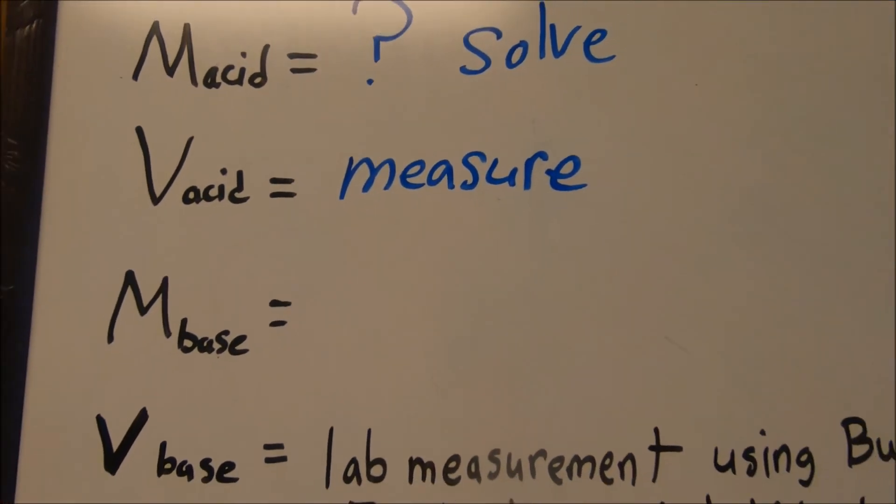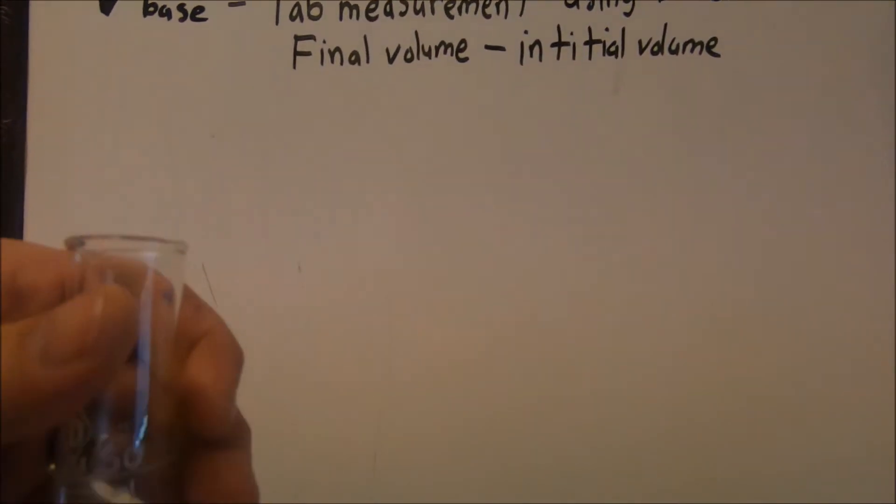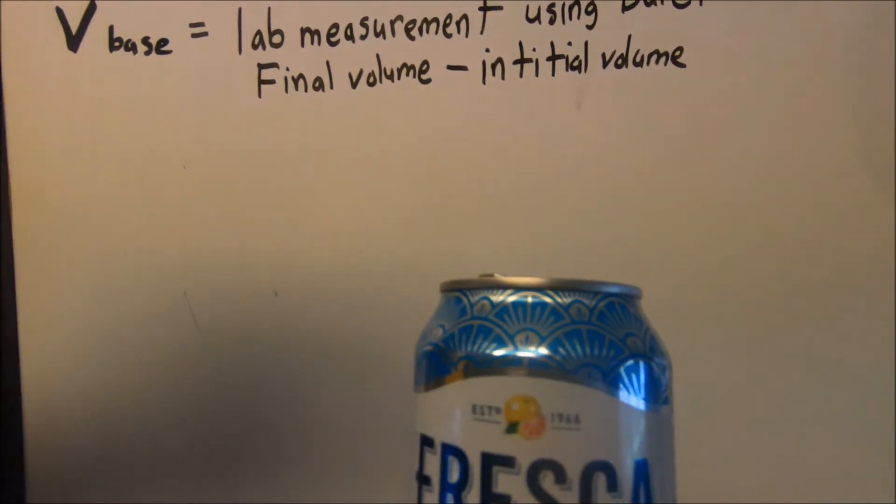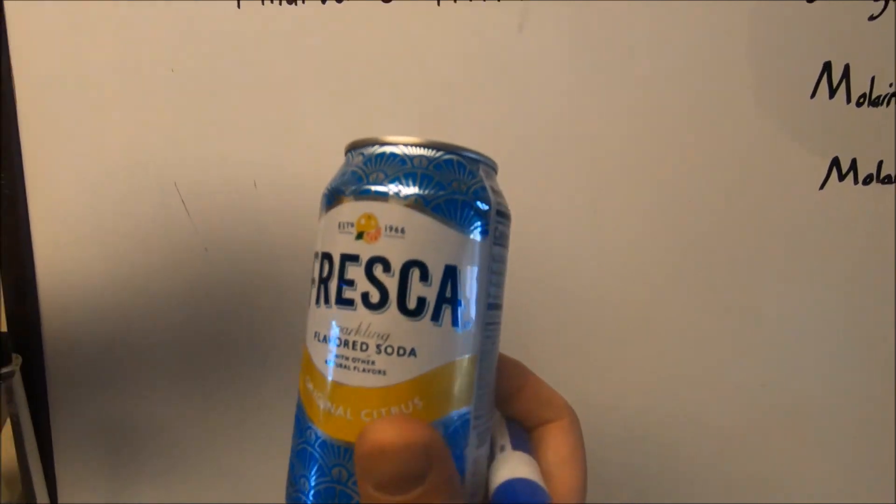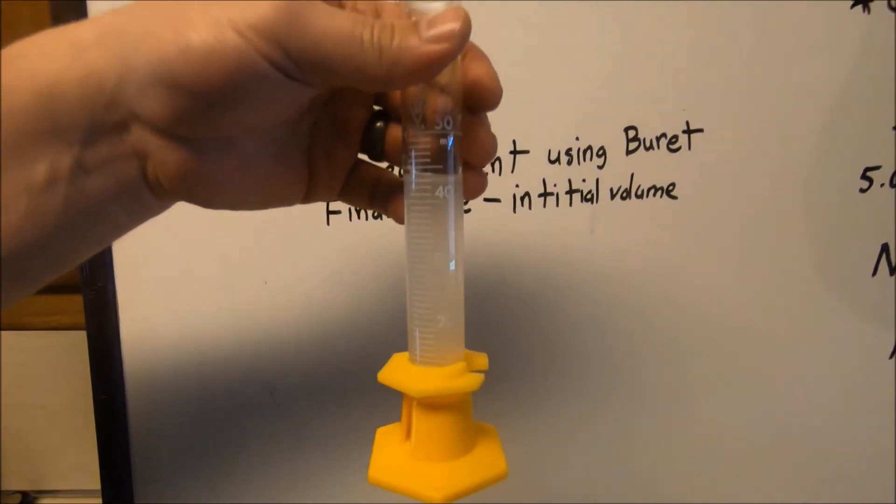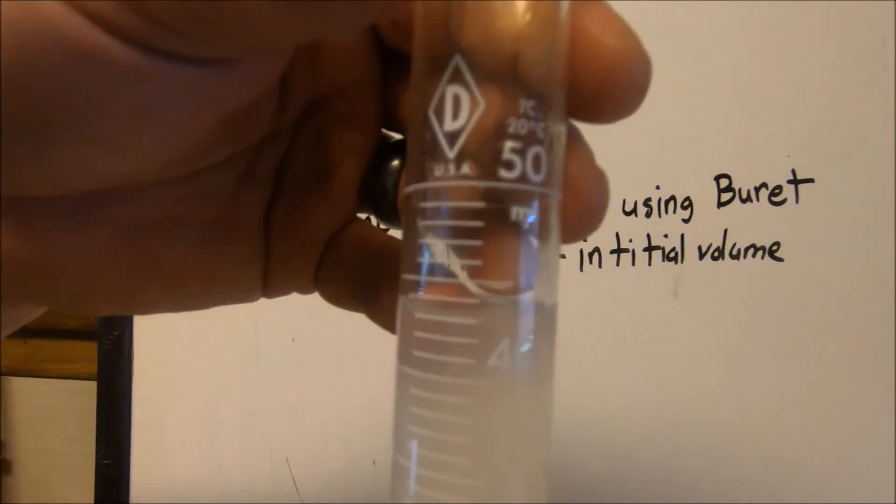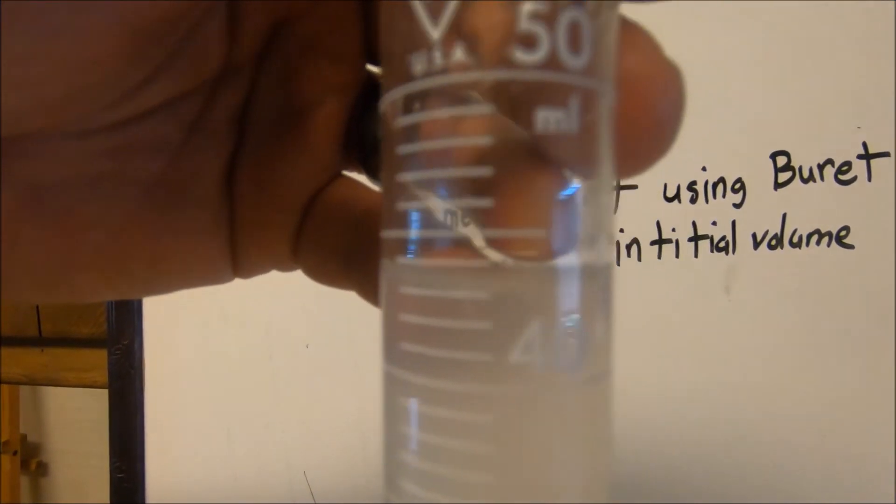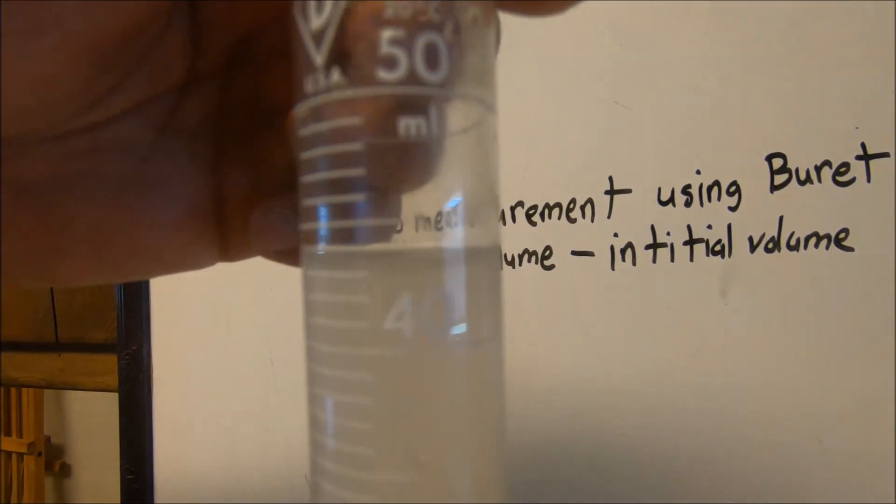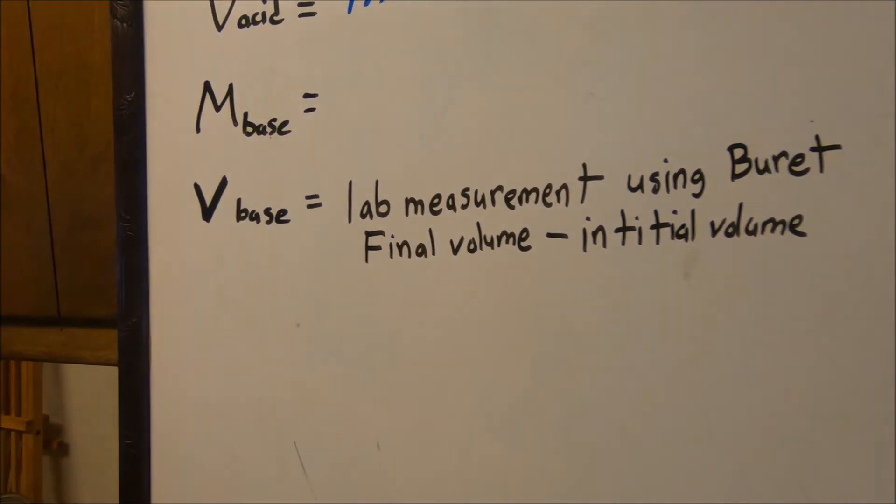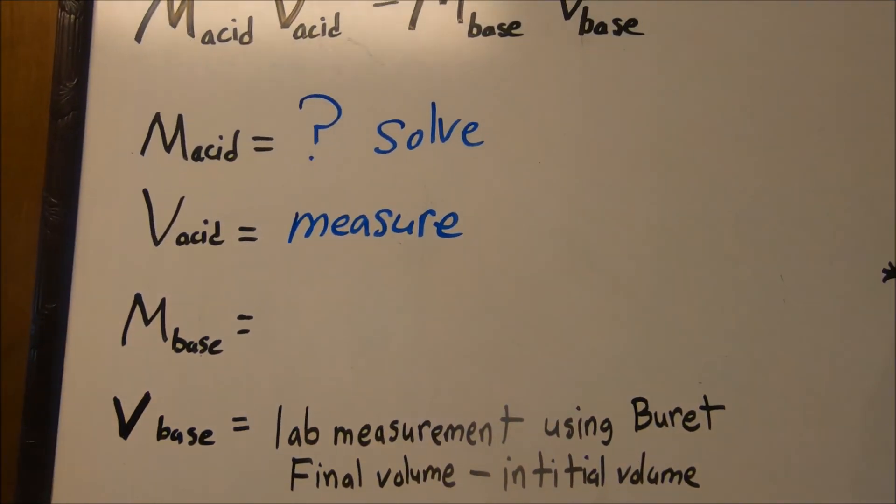To measure the volume of acid, what we've used is just some Fresca, and we've poured it into our graduated cylinder. Our volume is approximately just over 43, I'm going to say about 43.1 milliliters, so our volume of our acid.